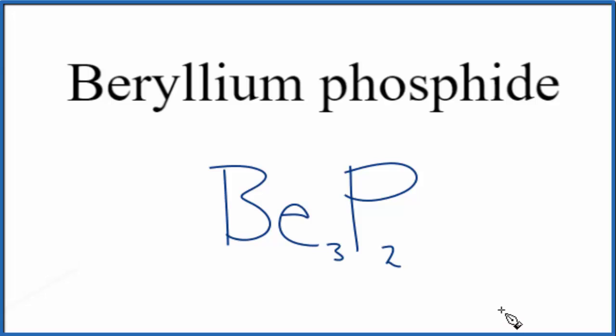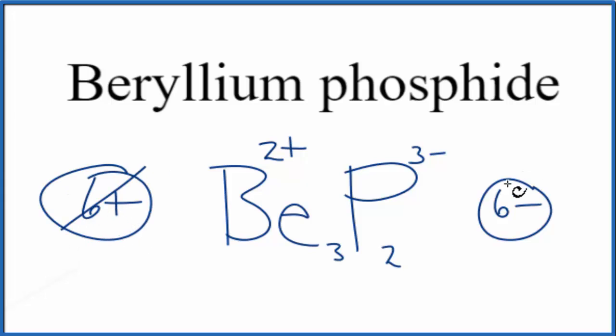Let's check our work though. We have beryllium at 2+ and the phosphide ion at 3-. Three times 2+ equals 6+. Two times 3- equals 6-. These add up to zero, so the net charge is zero.